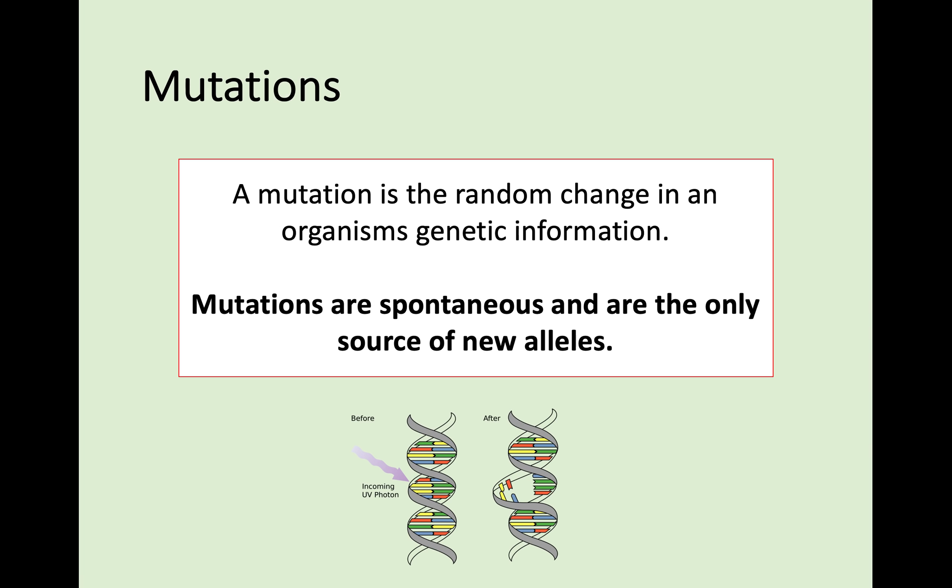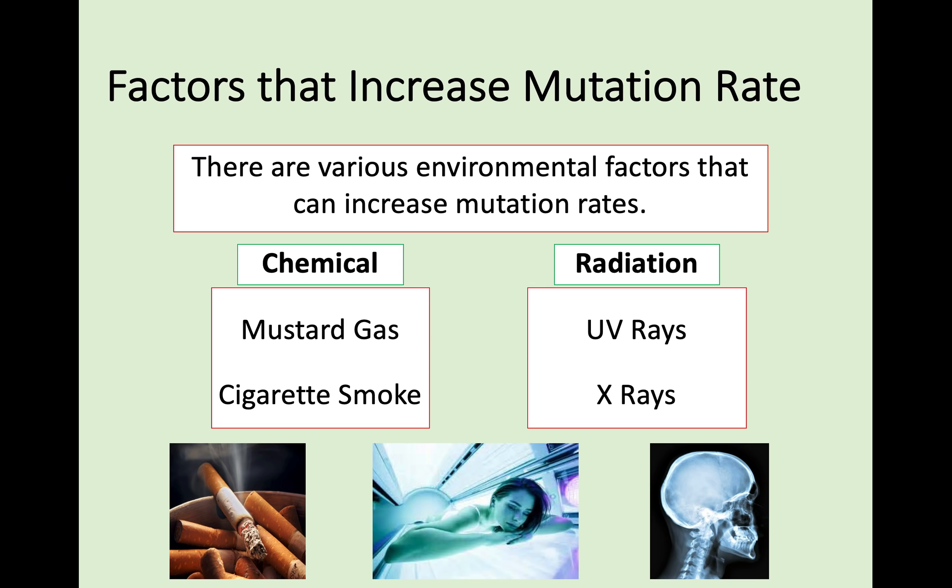We are going to be looking at something called mutations. A mutation is the random change in an organism's genetic information. What's really important to know is that mutations are spontaneous, so we can't predict when and where they're going to happen, and that they're the only original source of new alleles in your genetic information. Although they are spontaneous, we can look at some different factors that increase mutation rates.